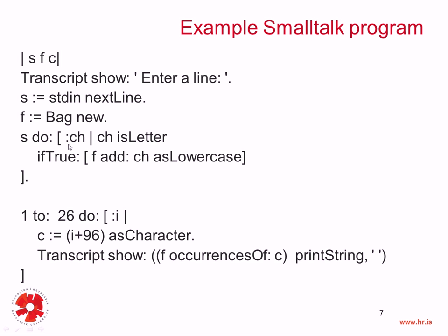We get access to each character using this temporary variable ch. Inside the block, we say :ch — that means for each element of s, we have access to the current character in the variable ch. What comes after the pipe is the code to be executed. The first statement says ch isLetter. Once again, the message isLetter is on the right-hand side and is sent to the object ch on the left-hand side. This is obviously a Boolean method, so it returns a Boolean — true or false. Everything is an object in Smalltalk.